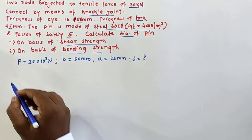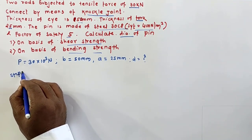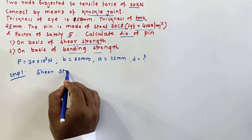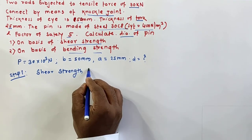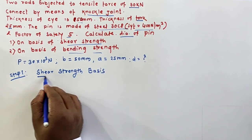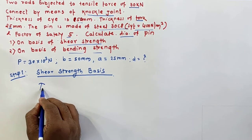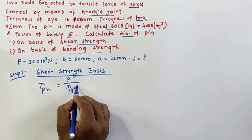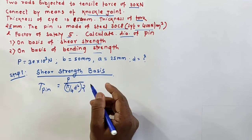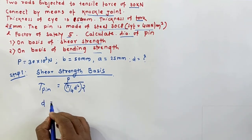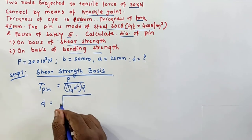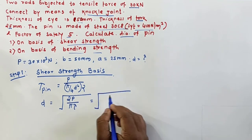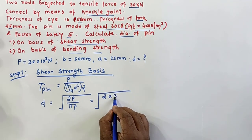First of all I'll write step number one: shear strength basis. So we know the shear failure in the pin is equal to load by area, that is pi by 4 D square. Because of double shear stresses it is 2, so the diameter of the pin is equal to square root of 2P by pi into tau. So I'll write 2 into P, that is 30.